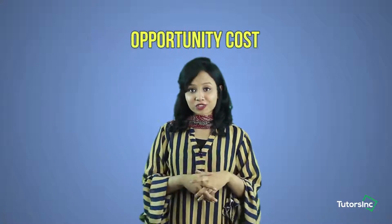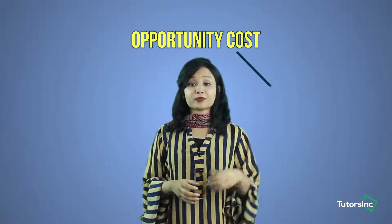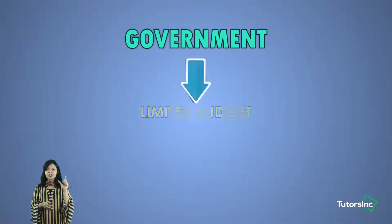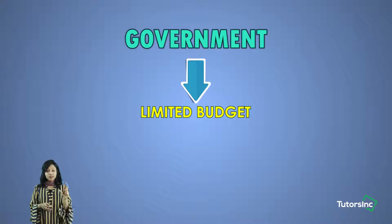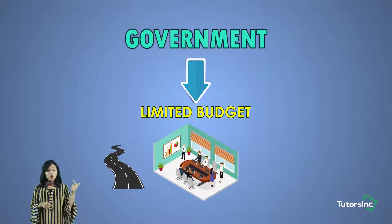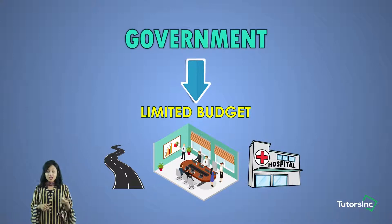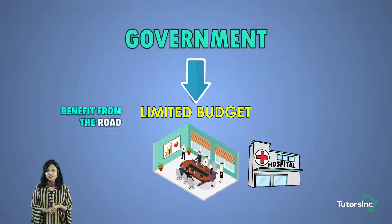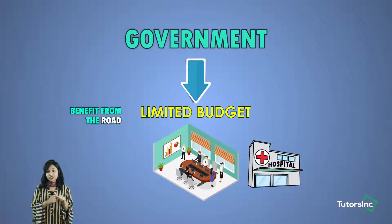These opportunity cost situations would also be faced by governments, businesses, and others. For example, a government has a limited budget. Within that budget, the government might want to make a new road, or the government might also want to make a new hospital. Due to the limited budget, the government chooses to make the hospital, so the benefit that the government would receive by making the new road is given up.